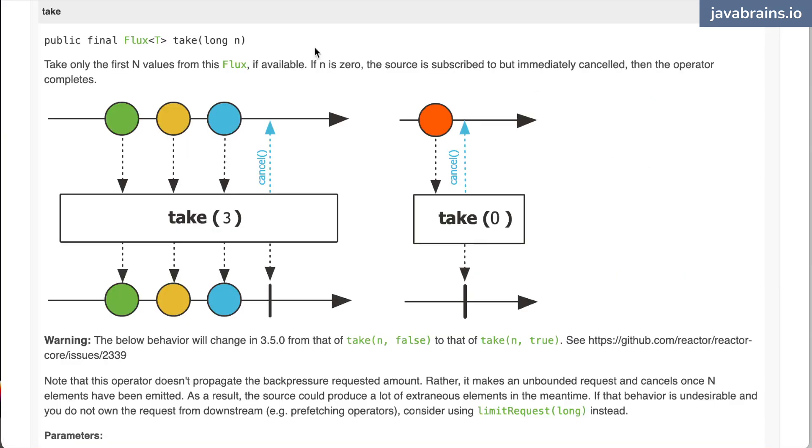There's one more called take, which basically takes n numbers, n elements. We've seen this in streams, right? You take a flux and you say I want to just take the first three elements. So you notice what happens here: you have three elements over here, and then you're going to get those three elements, and then there is immediately a completion event here.